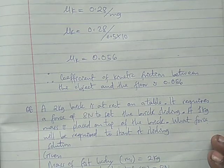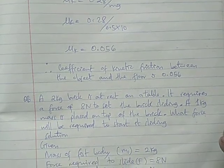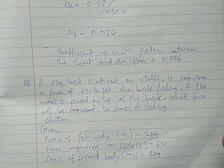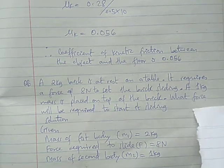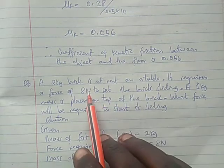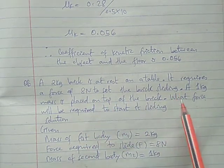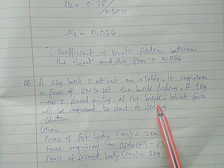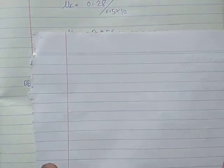So finally we come to answer this one. Kusabu nita kupa notes yuta ona step by step tu mfanyaji ya. Lakini swala sita, a 2kg brick is at rest on a table. If it requires a force of 8 newton to set the brick sliding, then a 1kg mass is placed on top of the brick. What force will be required to start it sliding?